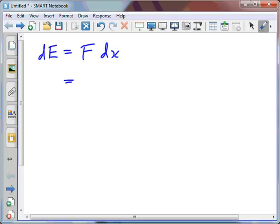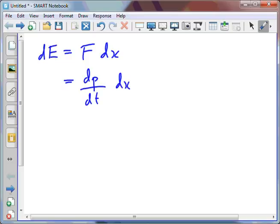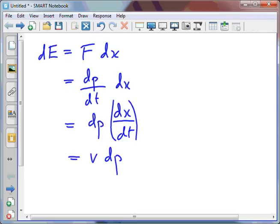Now F can be thought of as dp dt. I could rearrange that as dp times dx dt, and this is really the definition of velocity, so it's v dp. So dE is equal to v dp.